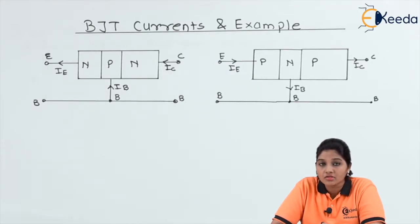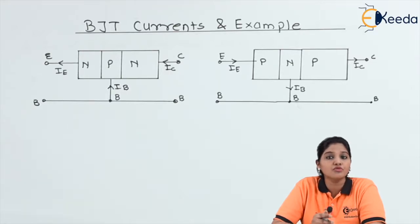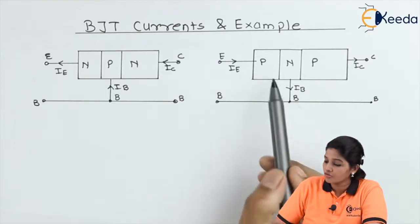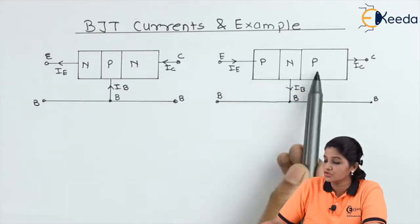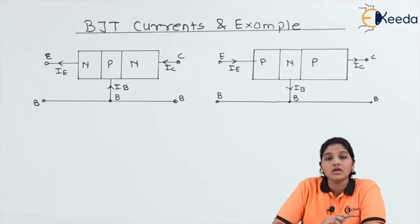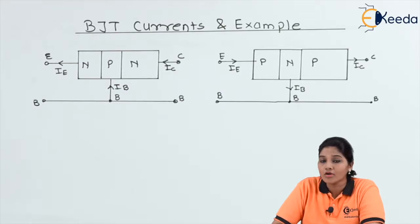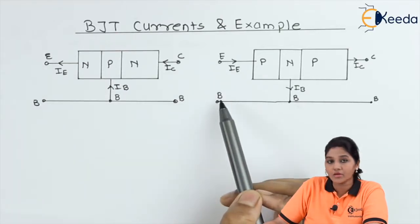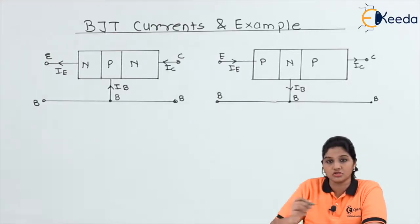The direction of collector current is from right hand side to left hand side. The collector current is also called injected current because it forms due to the injection of electrons from emitter to the collector. This is how the various currents are generated in case of NPN transistor — they are generated due to the movement of electrons. Now let's move towards the currents in PNP transistor. In case of PNP transistor, the N region is sandwiched between two P regions, and in the P region, holes are the majority carrier. When we apply forward biasing between emitter and base terminal, the holes start moving towards the base region.